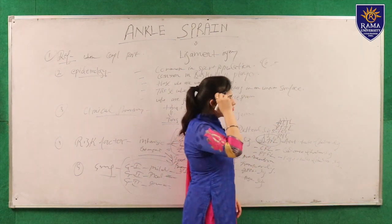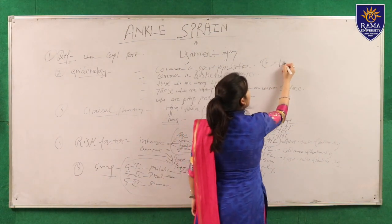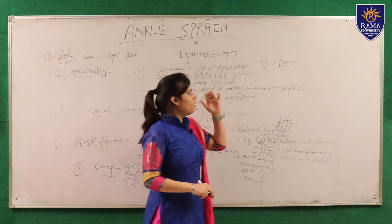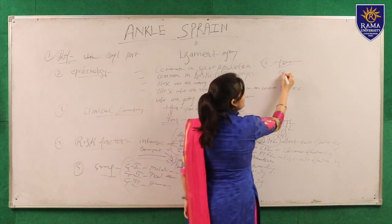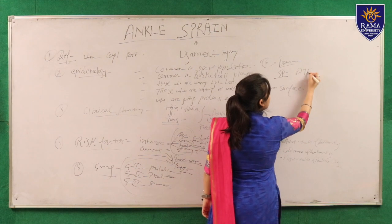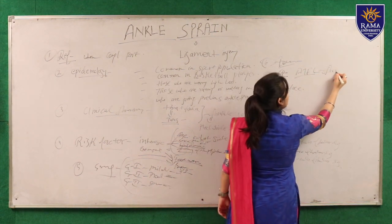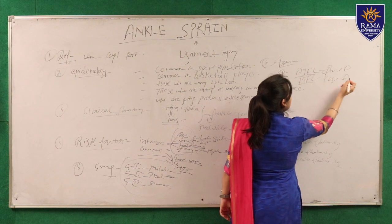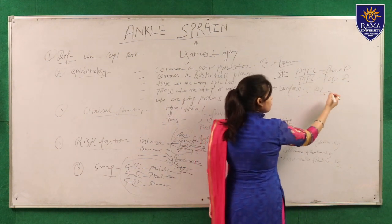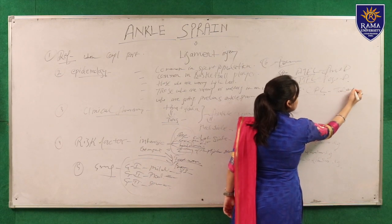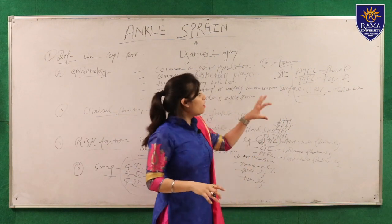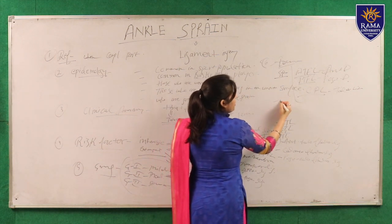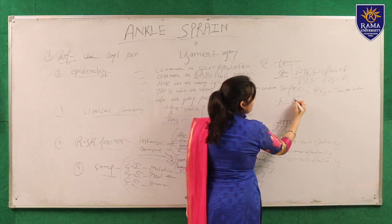The sixth point is examination. We perform palpation on the lateral or medial side, and special tests. For the ATFL, we do the anterior drawer test. For the PTFL, we do the posterior drawer test. For the CFL, we do the Talar Tilt test. These special tests are used to make a provisional diagnosis. We also perform radiological evaluation — MRI or X-ray.